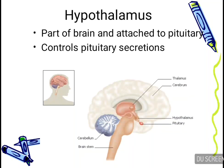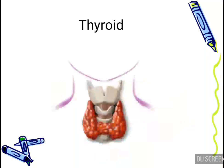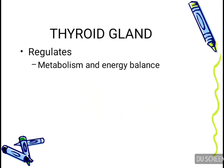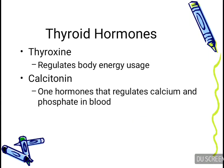Then we have the thyroid gland. As you can see in the diagram, the thyroid gland is present in front of the neck, just below the larynx, and it is a bi-lobed gland. The thyroid gland regulates metabolism and energy balance in our body. There are two basic hormones secreted by this gland: thyroxin, which regulates body energy usage, and calcitonin, which regulates calcium and phosphate in the blood.